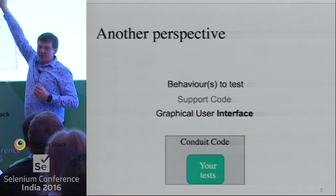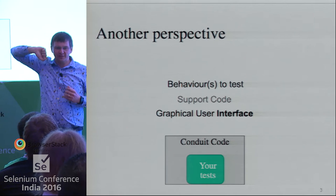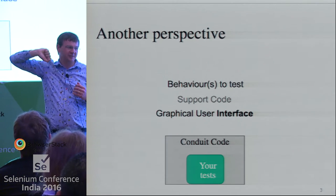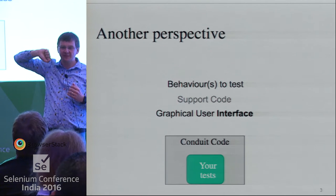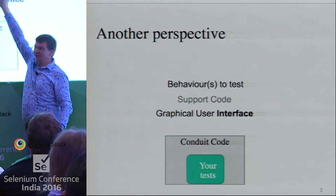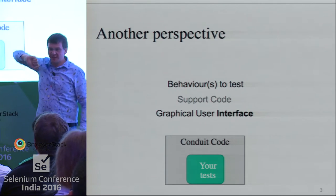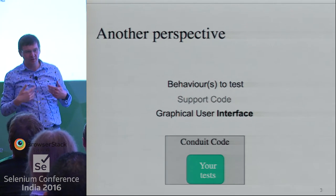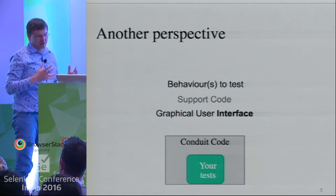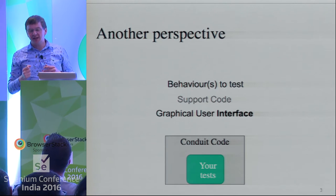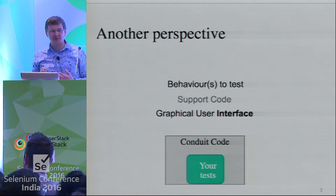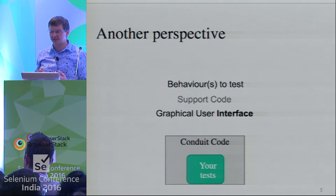That goes through a bunch of support code. How many of you have written software — not test automation software, but application or system software? Essentially there's normally lots and lots of code that runs that finally gets us to the behaviors we want to test, whether it's a login, putting something in a shopping basket, whatever it is we're trying to achieve. And if there are problems with the interfaces or the behavior of the code, the code is likely to be less reliable.